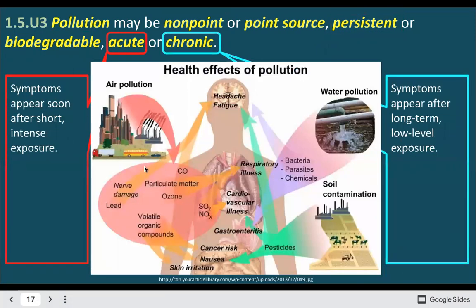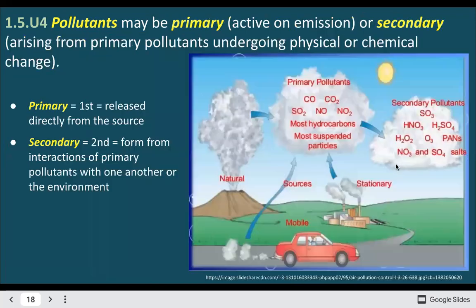We could have acute pollution versus chronic pollution — similar to pain. Acute means really intense symptoms appearing very close to when the event occurs, like giant oil spills. Versus longer-term, low-level pollution which builds up over time.